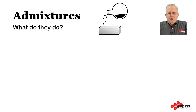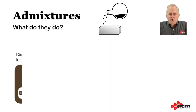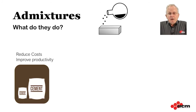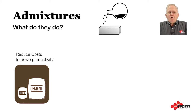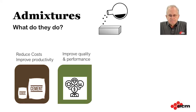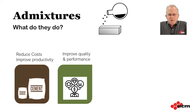So why do we use admixtures? We can use them to help reduce the cost of production, perhaps by reducing the amount of cement we need to use, or allowing us to make more units per hour, increasing productivity. We can use admixtures to improve the quality of our concrete, such as increasing the compressive strength and density.